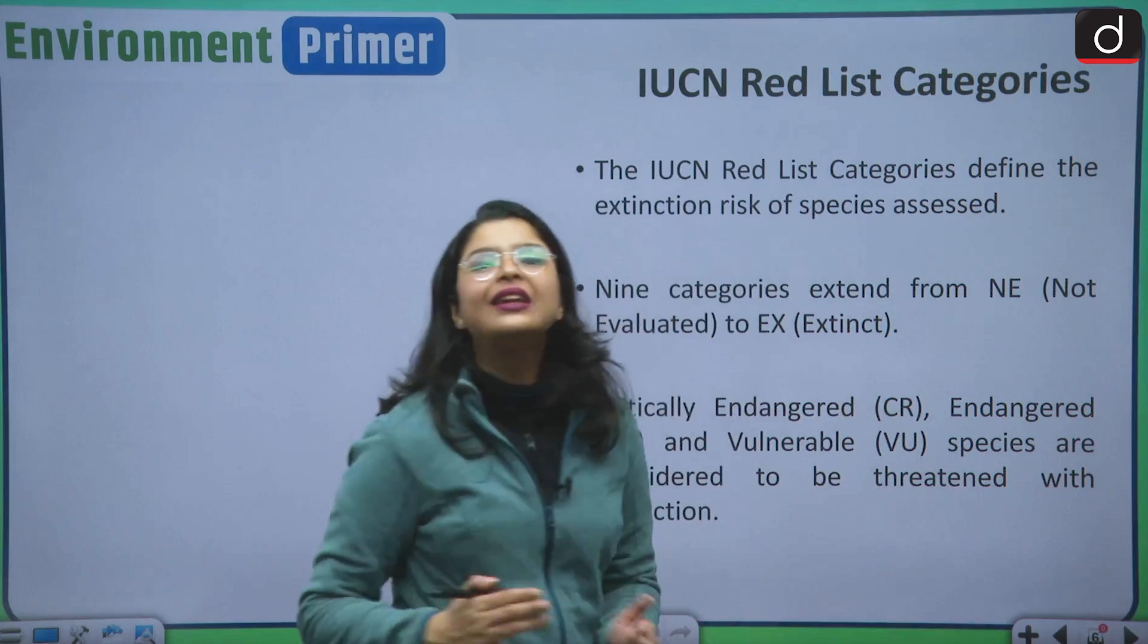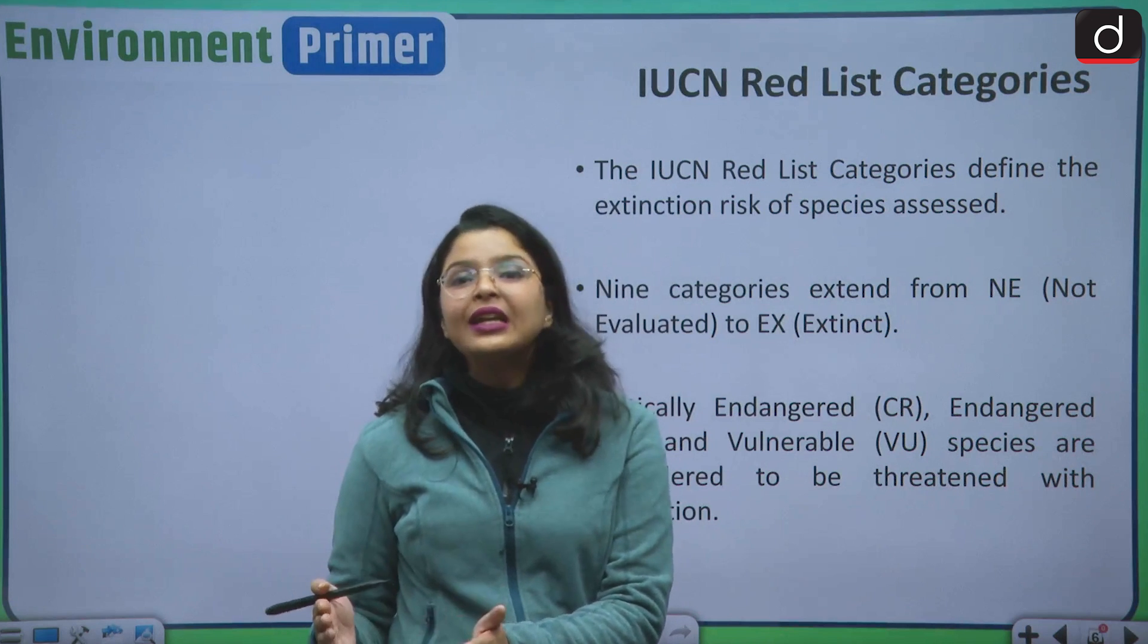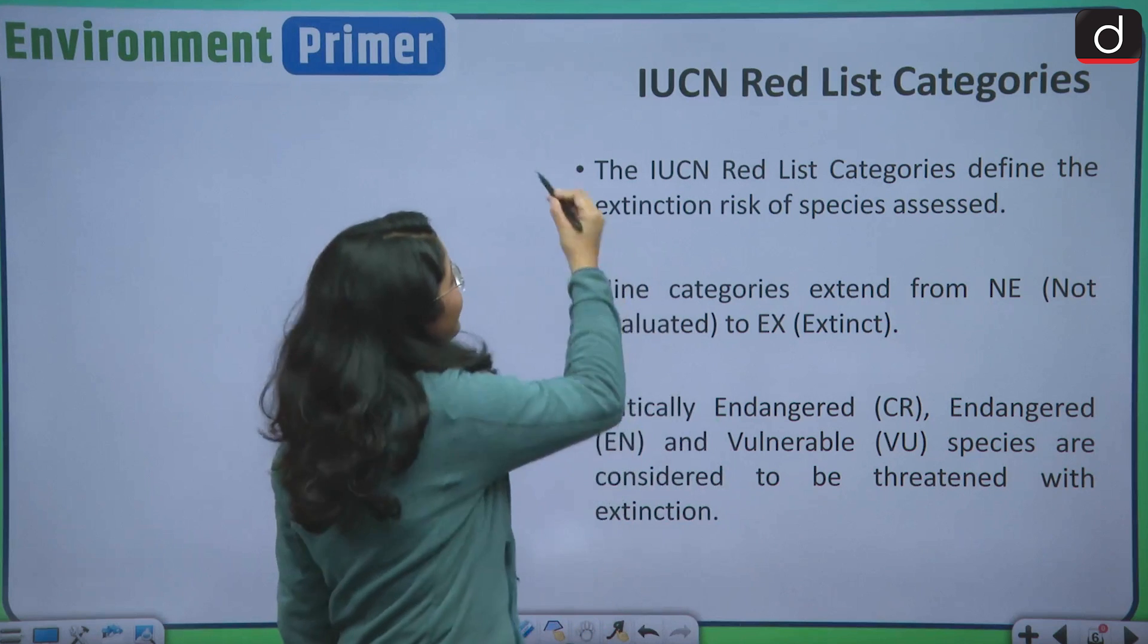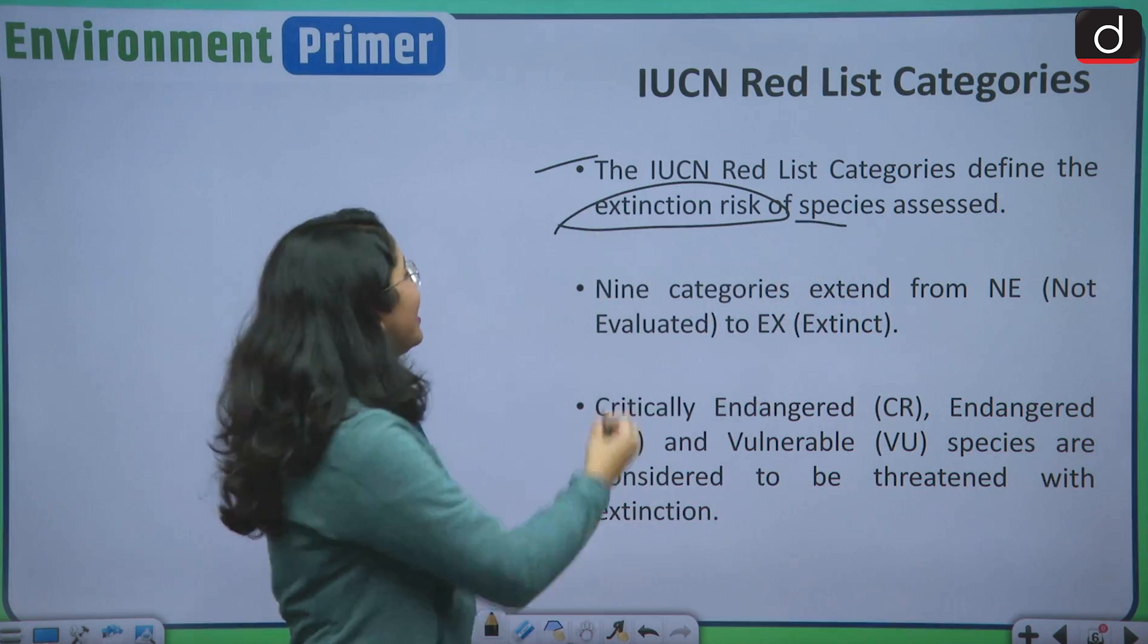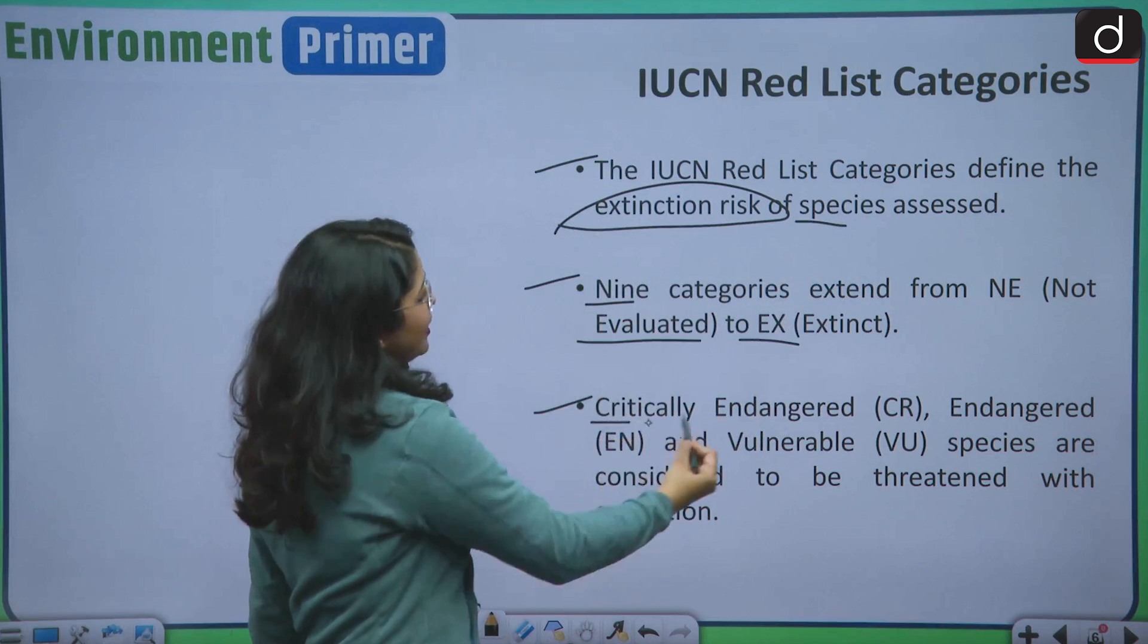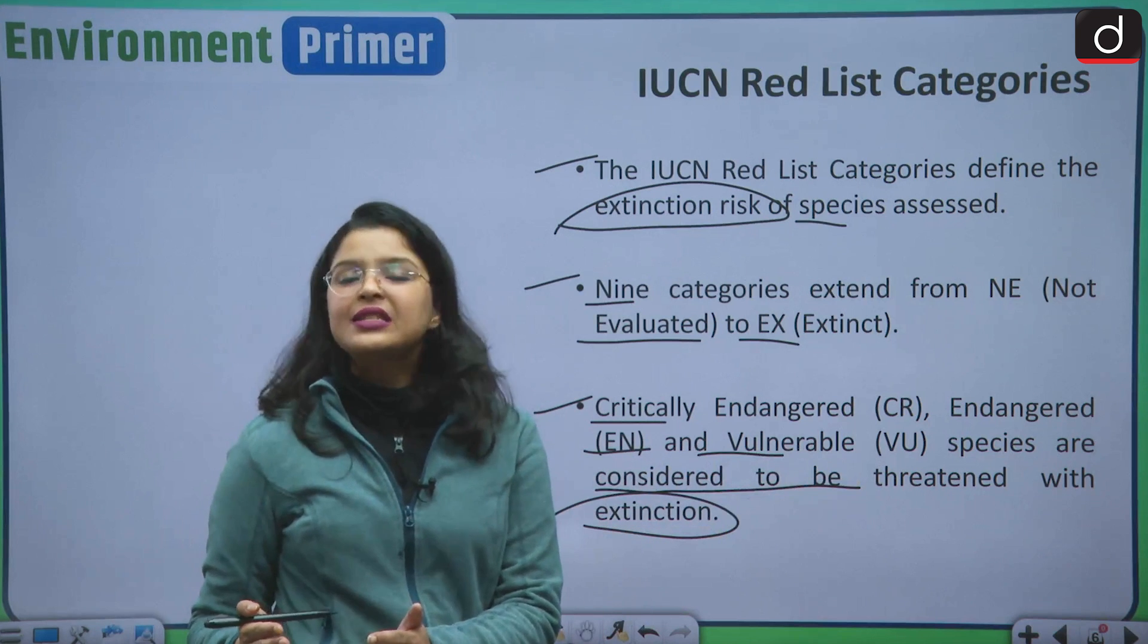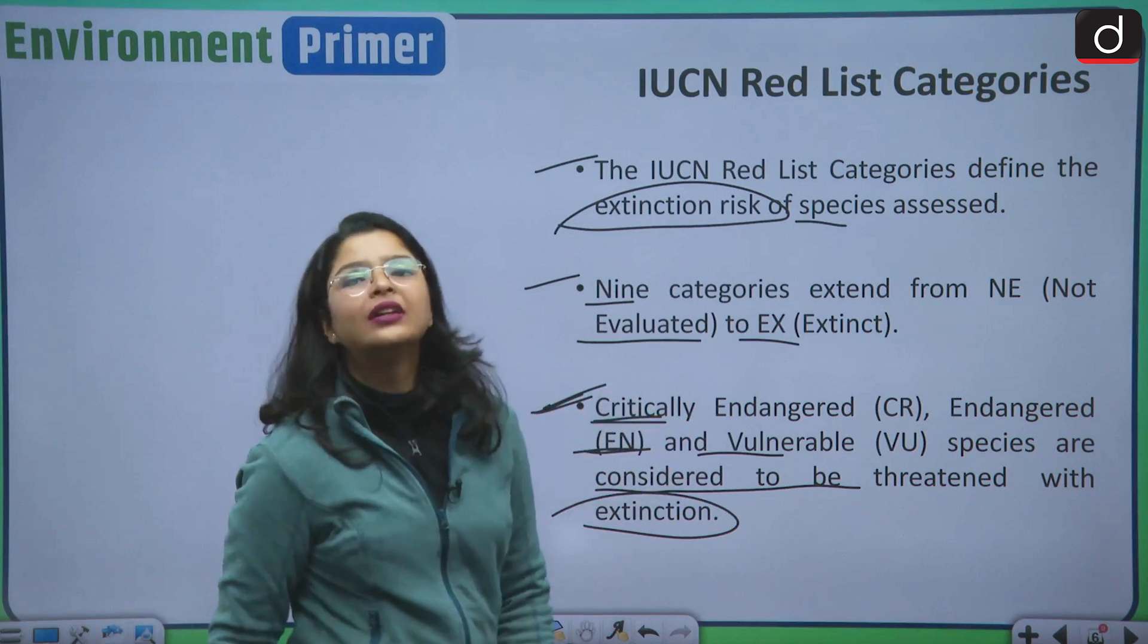Let us analyze the IUCN Red List categories. The categories which determine the preservation effort, the categories which determine that these species are on the verge of extinction and definitely we need to pay more attention to these species. The IUCN Red List categories define the extinction risk of species assessed. There are 9 categories which extend from not evaluated to extinct and critically endangered. Endangered and vulnerable species are considered to be threatened with extinction. And most of the question in your preliminary examination is asked from these 3 categories that is critically endangered, endangered and vulnerable species.